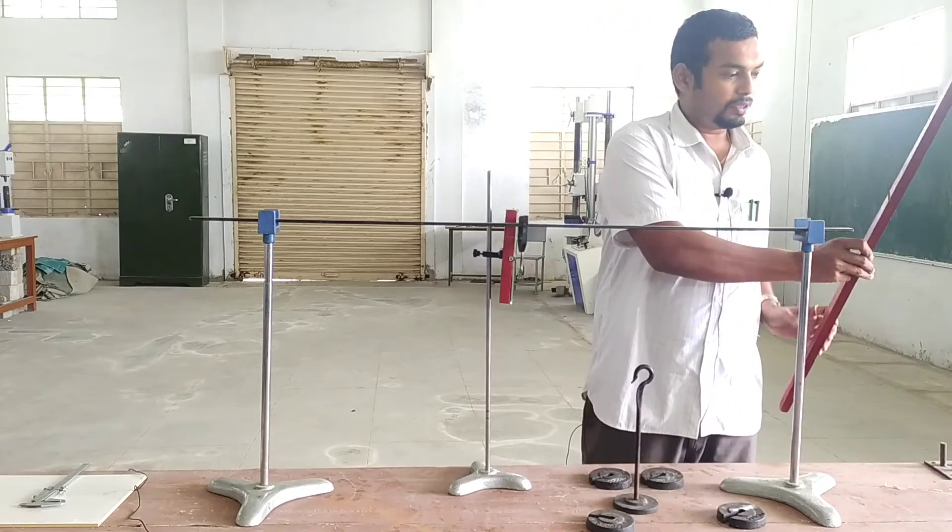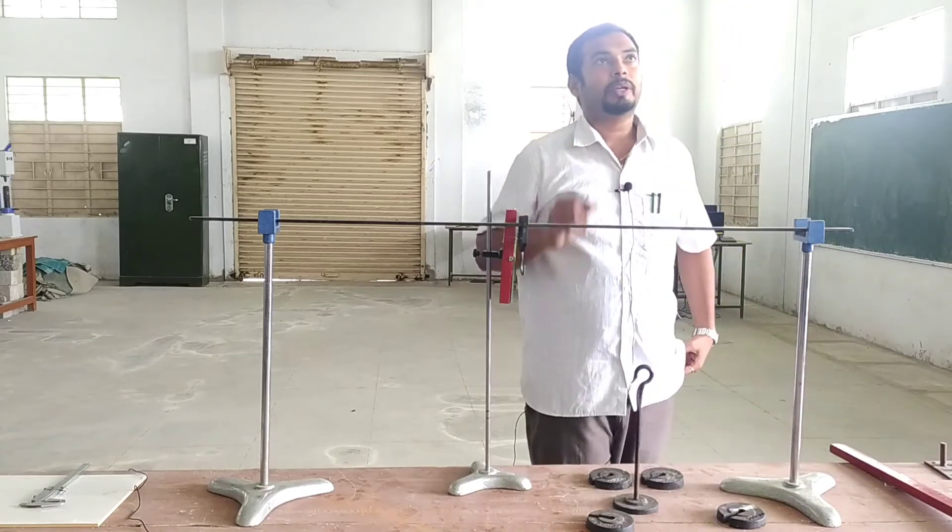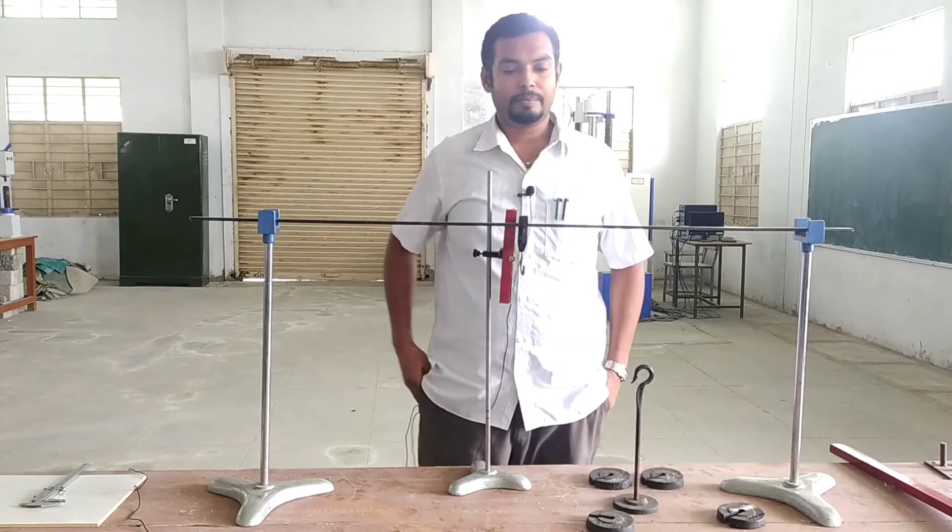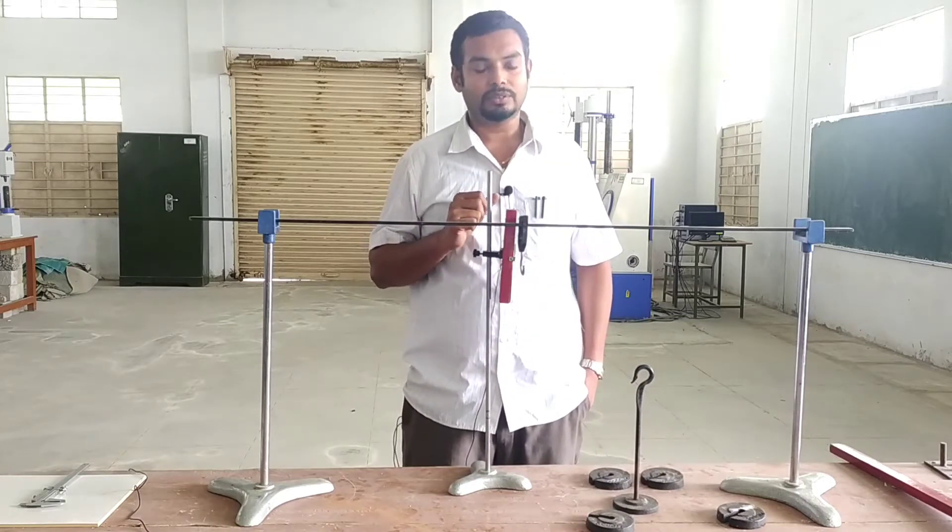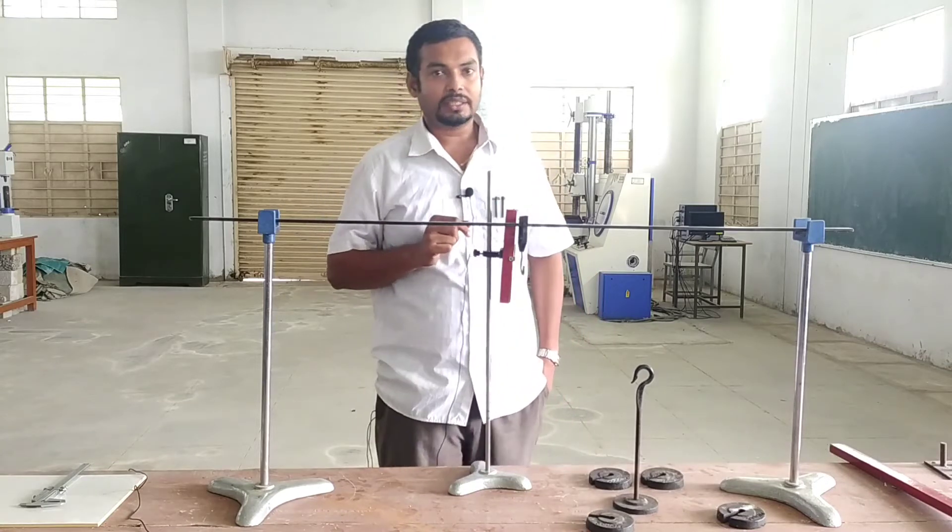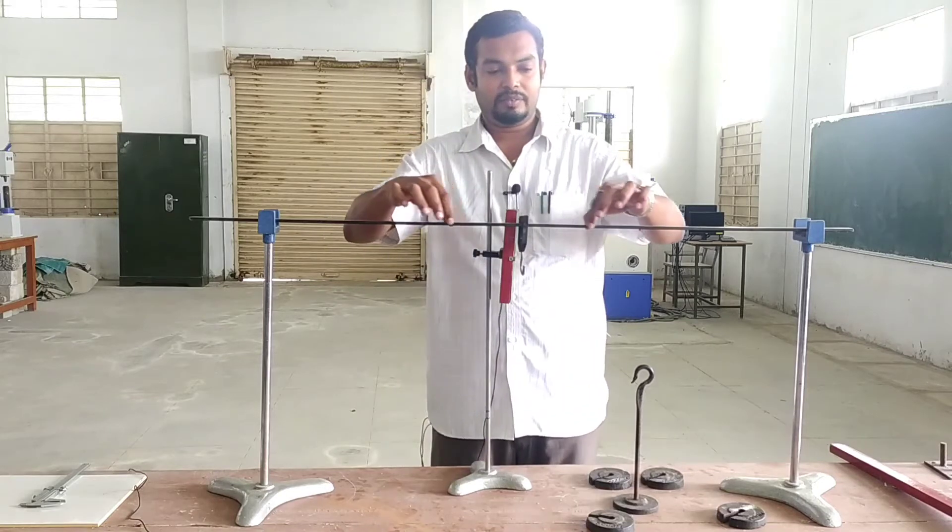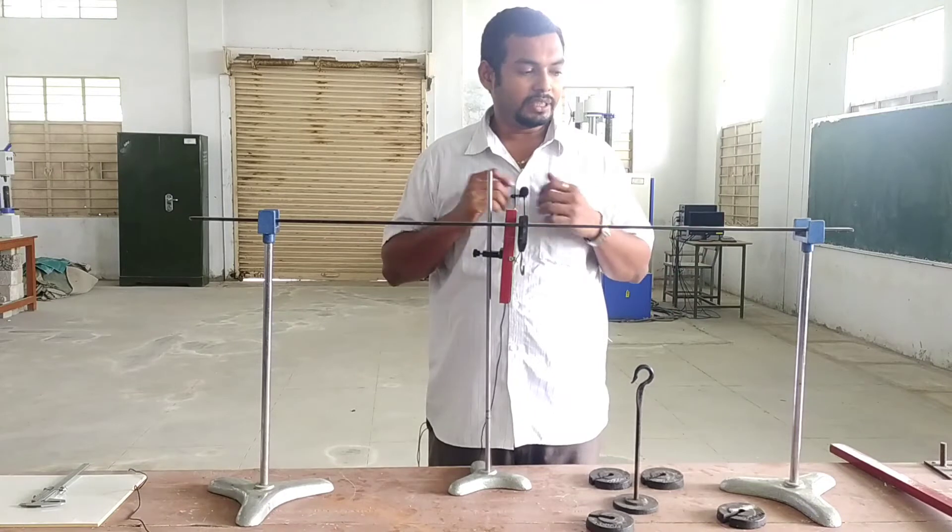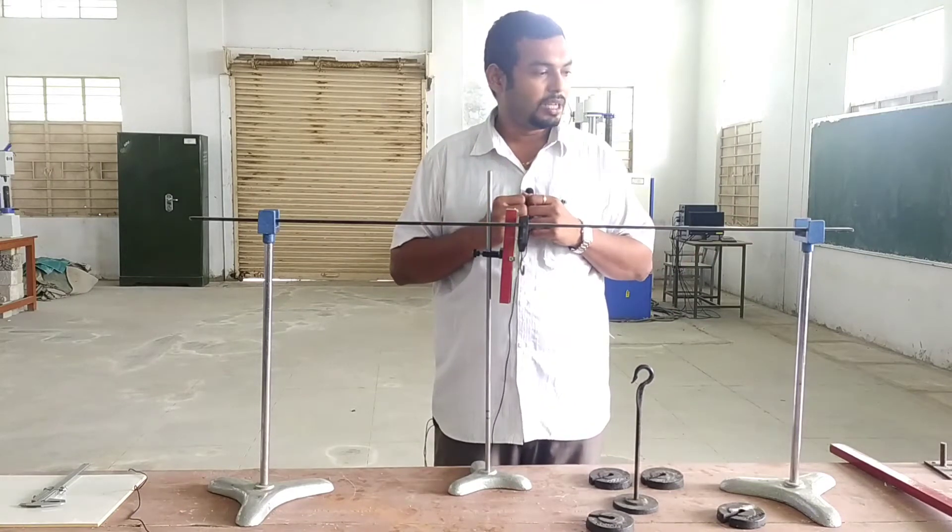What is the test? The beam cast under bending stress, the material is the Young's modulus. Young's modulus is the test. First the beam section, the length, breadth and thickness measure. Exactly 1 meter support place.